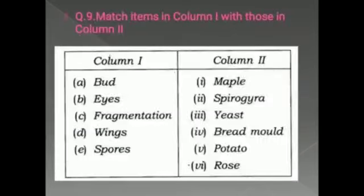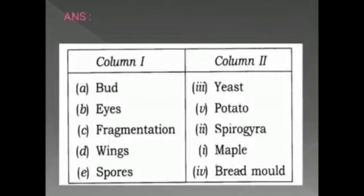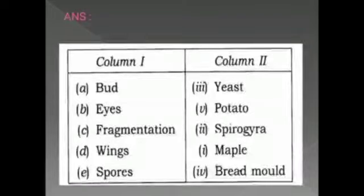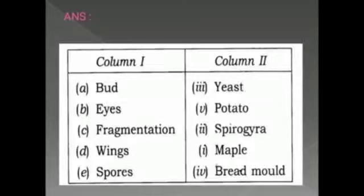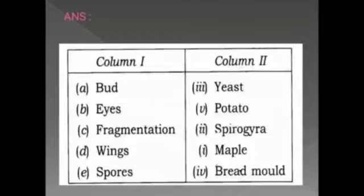Question number 9: match the items in column one with those in column two. Bird matches with yeast — the process of reproduction in yeast is budding. Eyes on potatoes match with fragmentation. The example of fragmentation is spirogyra. Seeds with wings match with maple. Spores match with bread mold.